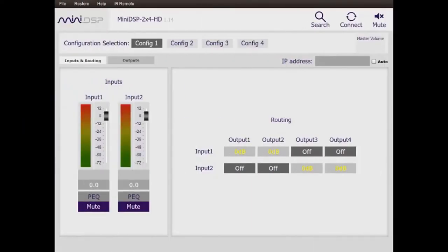The Mini DSP 2x4 HD is controlled from a software application called a plug-in. Here we have the plug-in input page where we have the input level selectors, the first parametric equalizers.